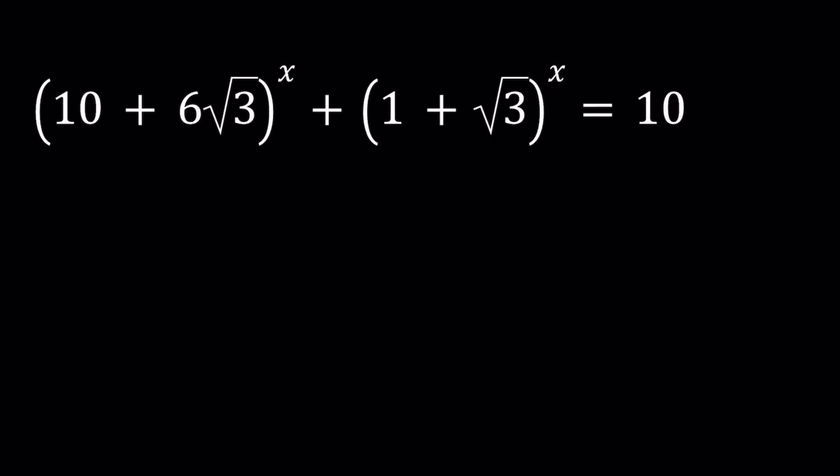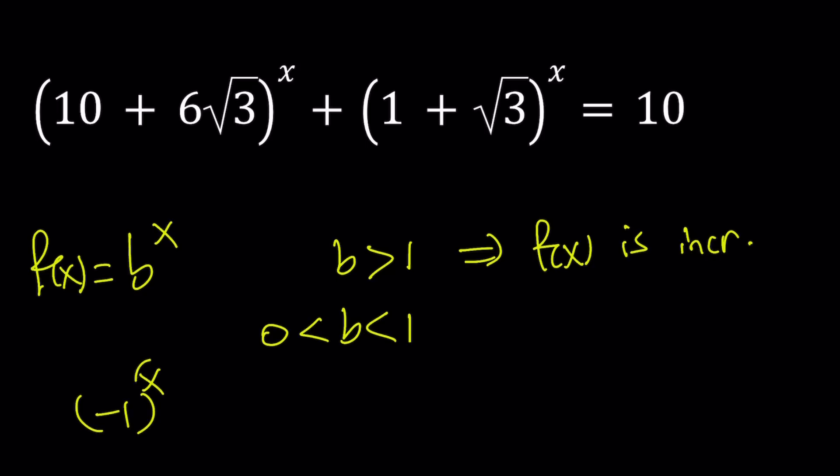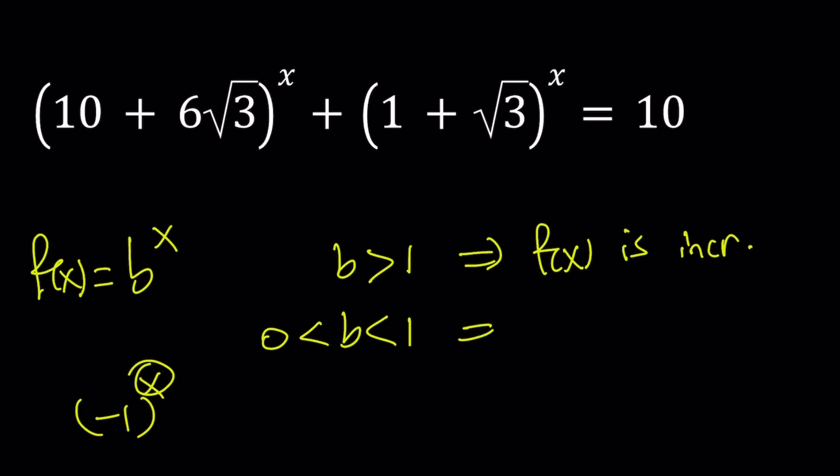First of all one thing to keep in mind is if you have an exponential function like b to the power x, let's call it f of x. If b is greater than 1 then f of x is increasing. If b is between 0 and 1, by the way the base you don't want that to be negative. Think about it, if you have something like negative 1 to the power x for so many values this is going to be undefined, like negative 1 to the power 1 half. That's why with exponential functions we want b to be positive.